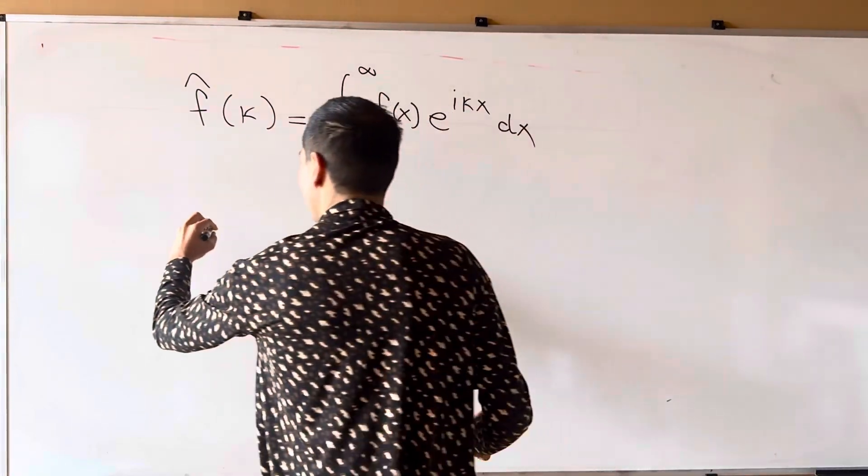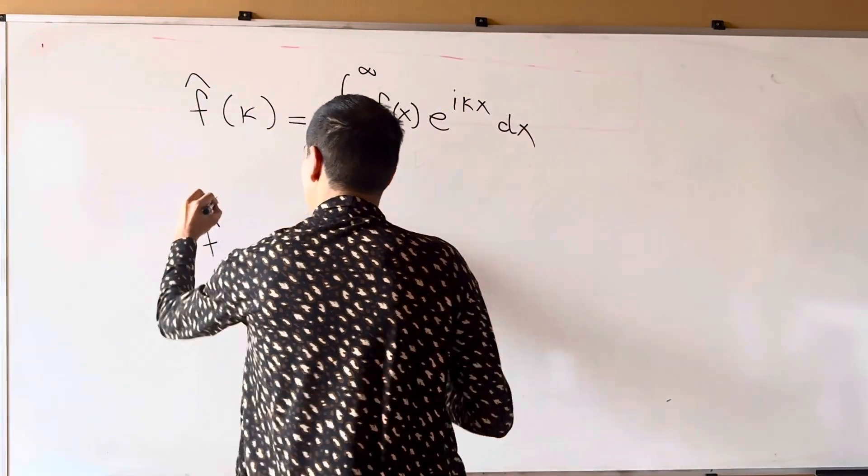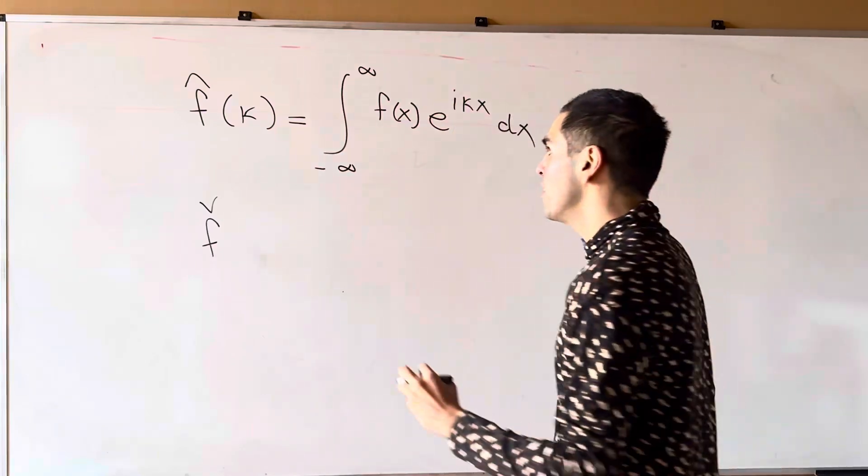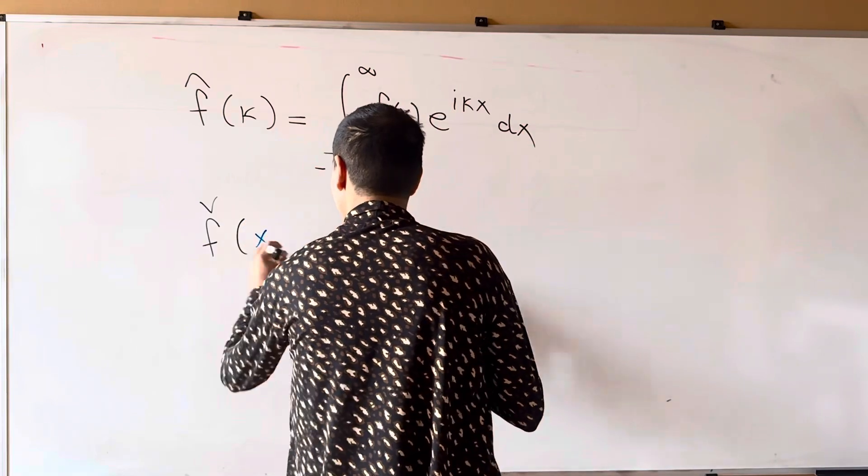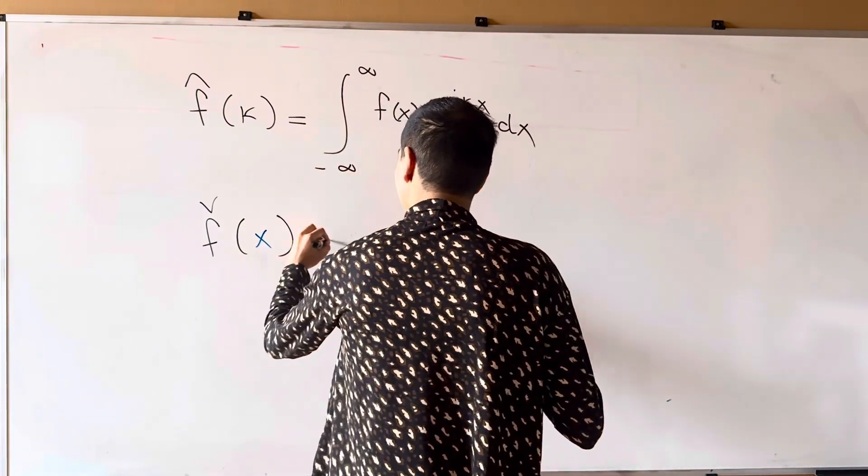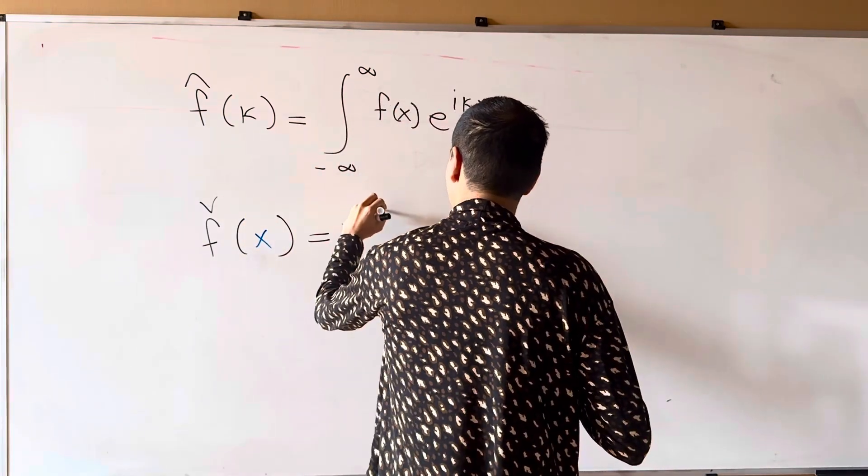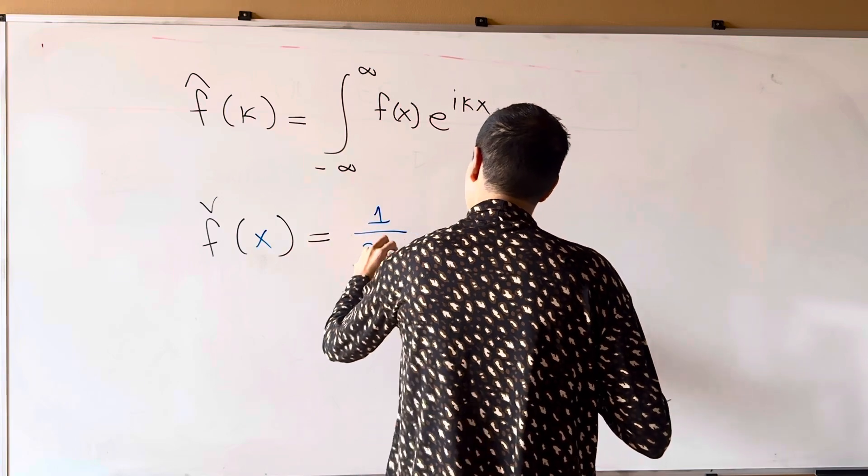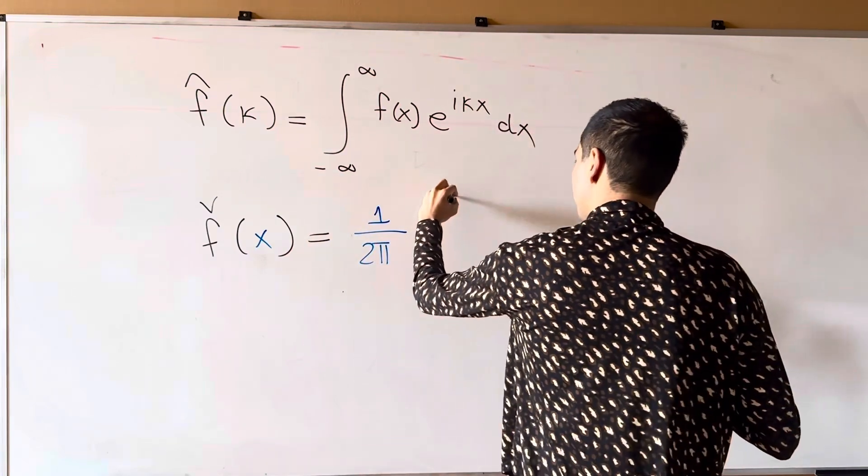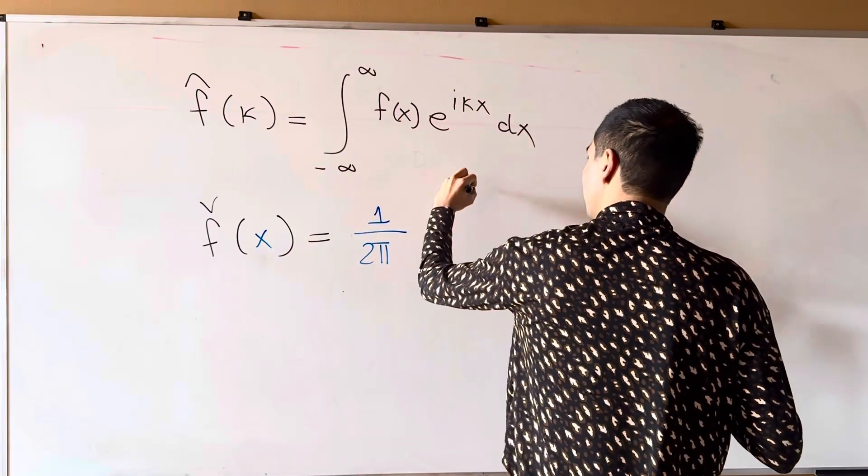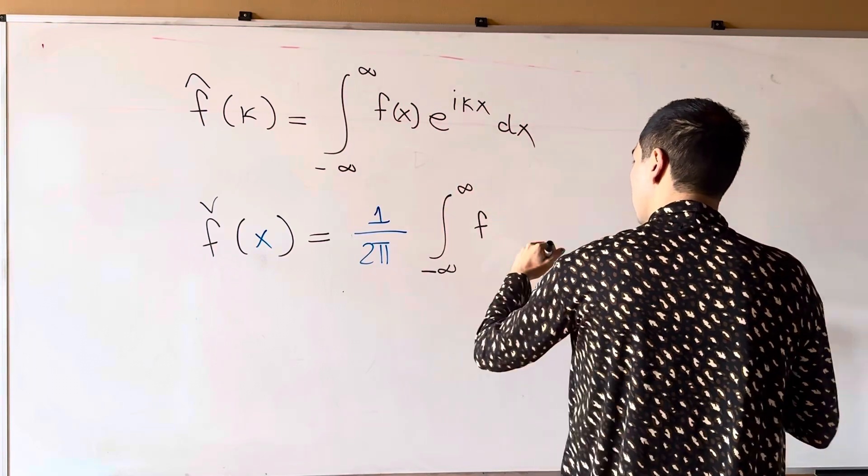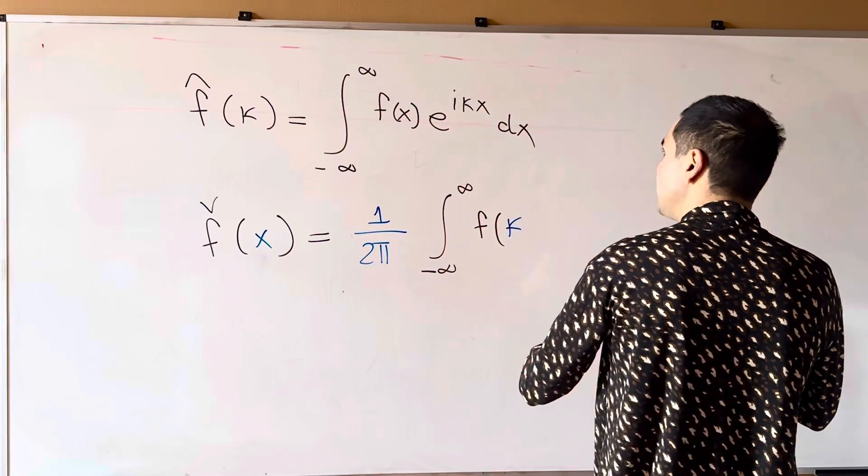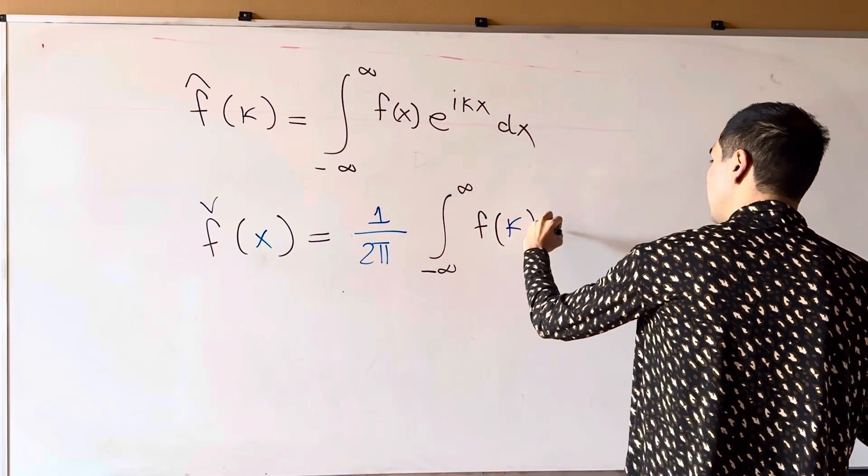Now, the inverse Fourier transform, so f, it's called f check, of x. So that's the first thing, it's a function of x. And that is a little pesky factor of one over two pi and then integral from minus infinity to infinity of f of kappa and then e to the minus i kappa x.